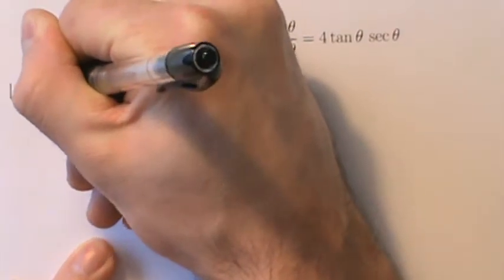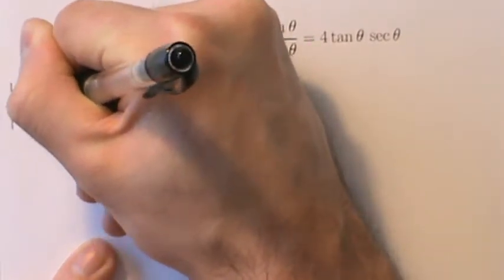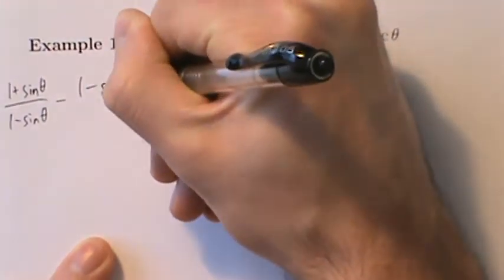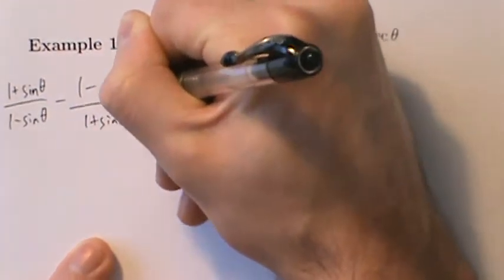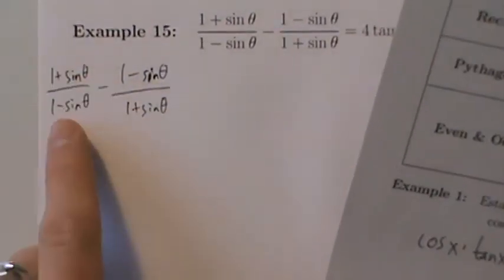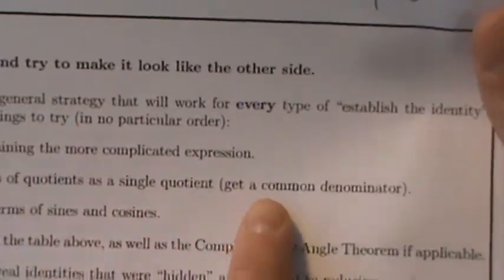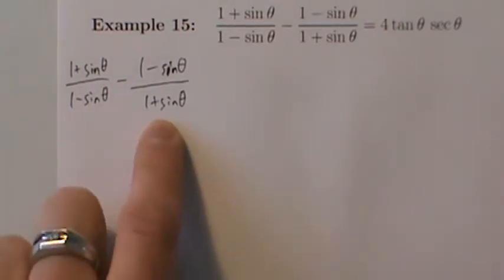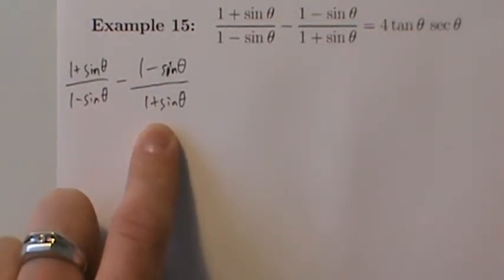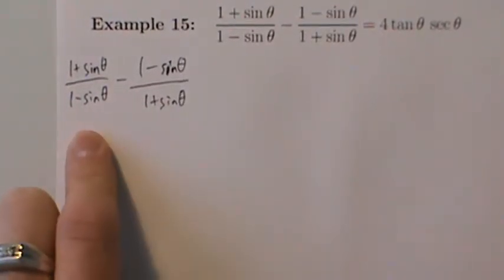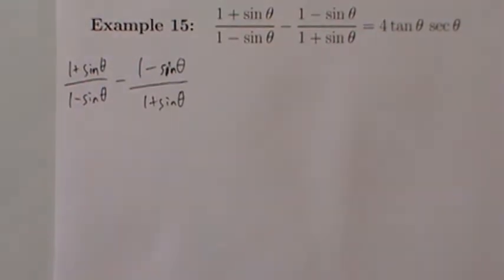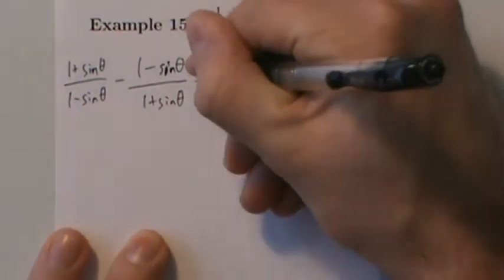So (1 + sinθ)/(1 - sinθ) minus (1 - sinθ)/(1 + sinθ). What could we do? We have a difference of two quotients — one quotient minus another quotient. So: rewrite sums and differences of quotients as a single quotient; in other words, get a common denominator. The denominator here is (1 - sinθ), the denominator here is (1 + sinθ), so the common denominator is going to be their product: (1 - sinθ)(1 + sinθ). Pretty nasty common denominator, but we've got to work with it.